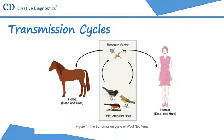During later blood meals, when mosquitoes bite, the virus may be injected into humans and animals, where it can multiply and possibly cause illness. However, humans, horses, and other mammals are dead-end hosts because they do not develop high levels of virus in their bloodstream and cannot pass the virus to other biting mosquitoes.